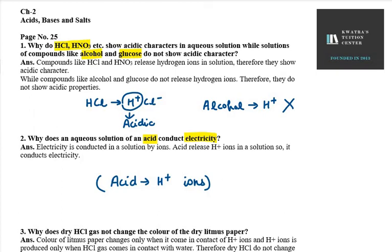If you add any type of base, it will not conduct electricity, because bases have OH- ions, not H+ ions. If we want to conduct electricity, the solution should have H+ ions in it. Then only we can conduct electricity. Now moving on, we have the third question.